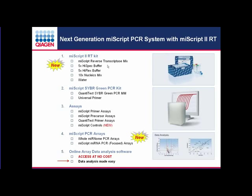The miScript SYBR Green PCR kit contains the universal reverse primer for assembling real-time PCR using microRNA-specific forward primers. miScript primer assays are the microRNA-specific forward primers only. We also have miScript precursor assays — which are precursor-specific forward and reverse primers used without the universal primer — QuantiTect primer assays for mRNA quantification, and miScript controls: new normalization controls that work equally well with cDNA prepared using either high-spec or high-flex buffer and are highly conserved across multiple species.